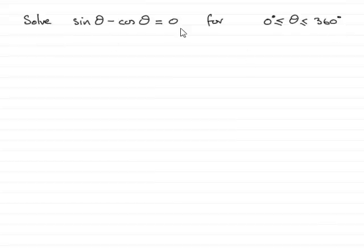So, how are we going to do this? Well, first of all, I notice that we have got different trig functions here. We've got a sine and we've got a cosine. And because it doesn't factorise...